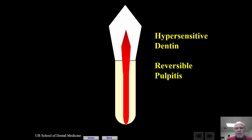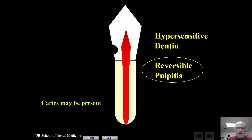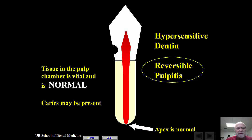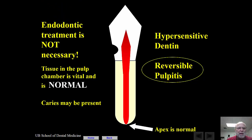You might also have reversible pulpitis, which can come from some recurrent caries, new caries, or a slight amount of caries. The diagnostic features are: yes, it's sensitive to cold, but the sensitivity goes away immediately — it doesn't linger at all. The apex with hypersensitive dentin is normal, the tissue in the pulp chamber is normal, and the periapical tissue is normal, but caries could be present. Endodontic treatment is not necessary in this case.